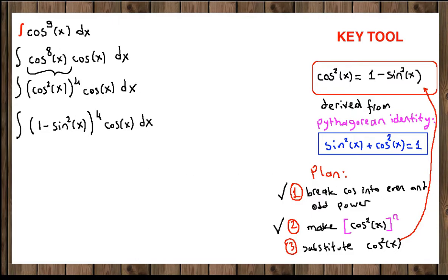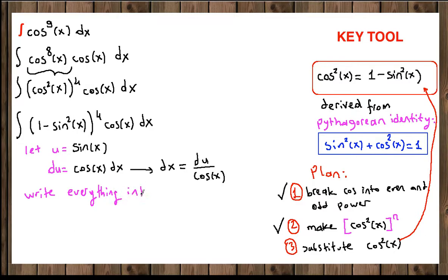Now we are going to do u substitution. Let u be equal to sine of x. Then du will be derivative of sine of x which is cosine of x dx. And if we solve for dx here, dx is equal to du over cosine of x. Now write everything in terms of u.